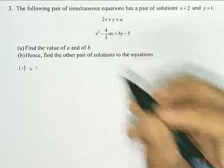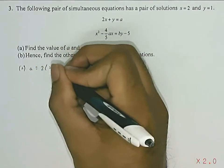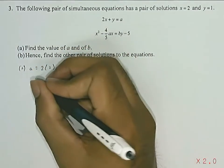We will get a is equal to 2 times 2 plus 1, which is equal to 5.